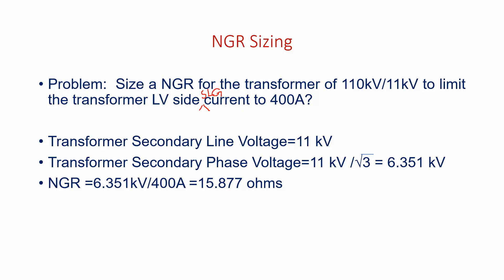So NGR is calculated simply as secondary phase voltage divided by the amount of current to be limited in the secondary side of transformer single line to ground fault, that is 400. So 6.351 divided by 400 is 15.877 ohms. Your NGR value is 15.877 ohms.